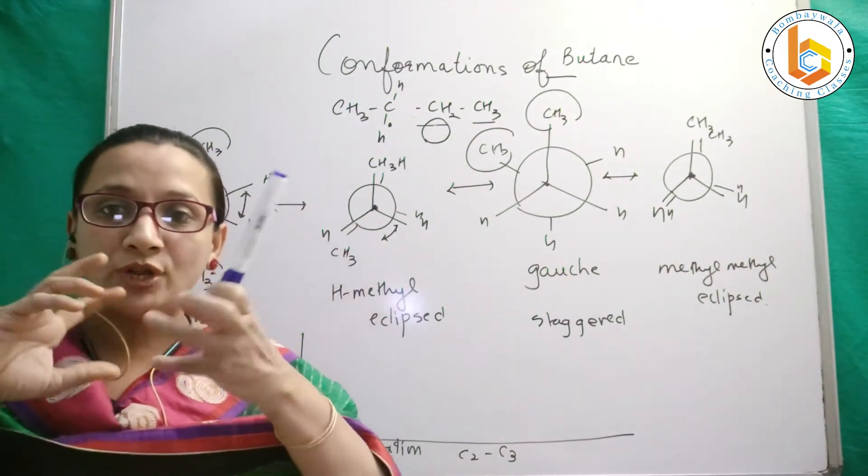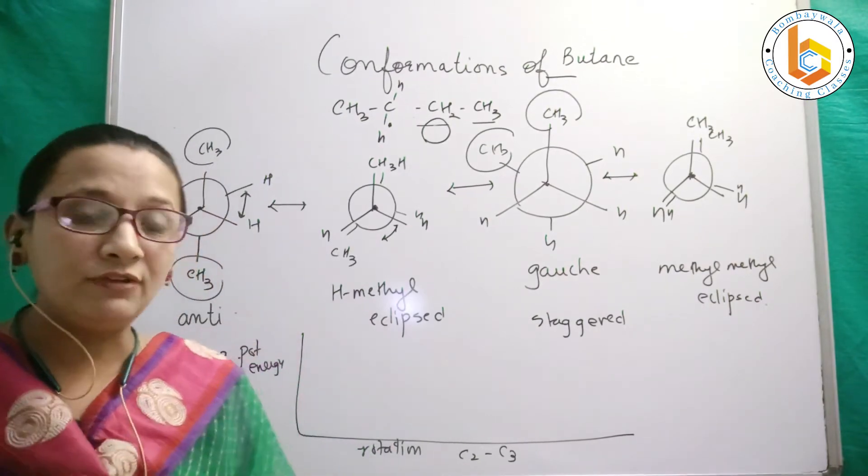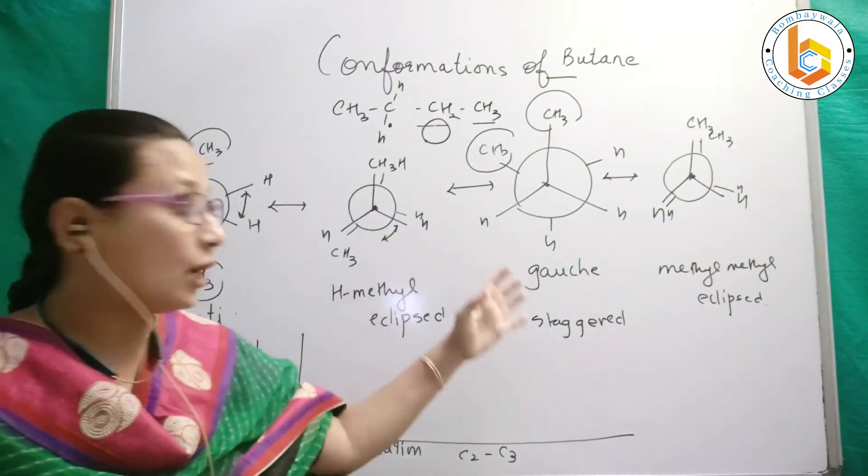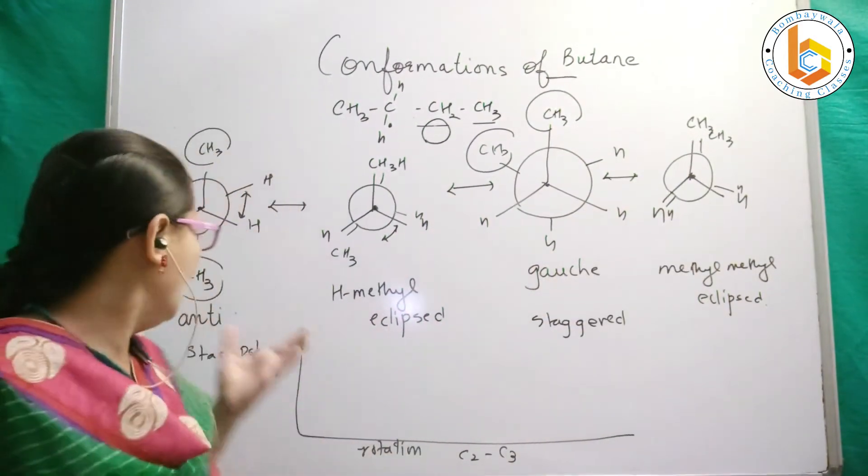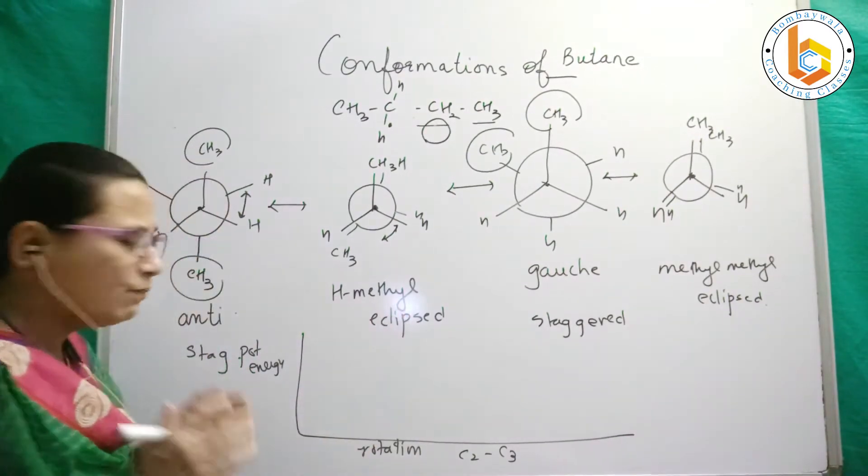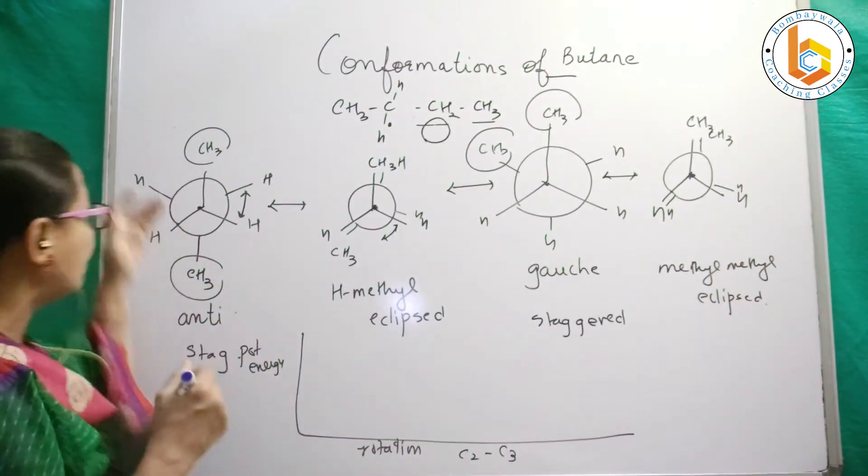We have considered these two carbons as our carbons on which rotation is occurring, and with that we created the anti, hydrogen methyl eclipsed, gauche, and methyl methyl eclipsed forms. The anti-eclipsed form will be the most stable because the two methyl groups are lying farthest apart.